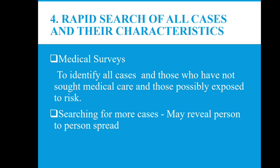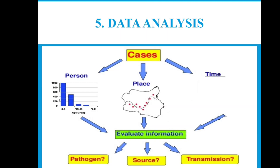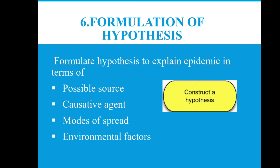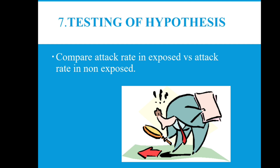The next step is the rapid search for all cases and their characteristics. Rapid search can be done by medical surveys to identify all cases, including those who have not sought medical care and those possibly exposed to the risk. Searching for more cases may reveal person-to-person spread. Data analysis is done by time, place, and person, and then evaluate the information for pathogenicity, source, and transmission. Formulate the hypothesis to explain the epidemic in terms of possible source, causative organisms, mode of spread, and environmental factors. After formulation, test the hypothesis by comparing the attack rate in exposed versus non-exposed groups, which will identify the source of disease or infection.